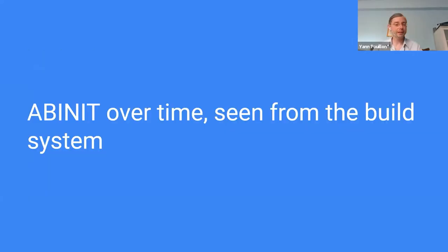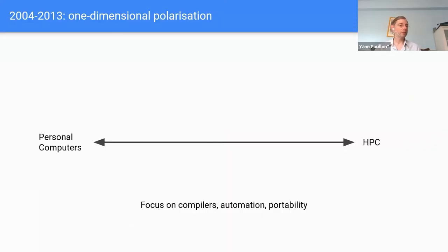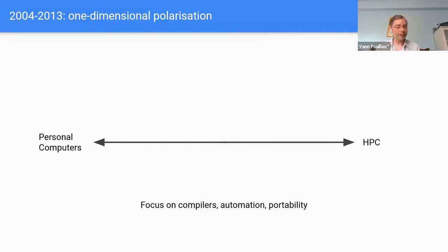Regarding the build system of Abinit, I will very briefly show different perspectives on the evolution it has undergone through time — in two slides. From 2004 to 2013, we started with a relatively simple situation where we had to tune parameters between personal computers and HPC — essentially a one-dimensional problem.